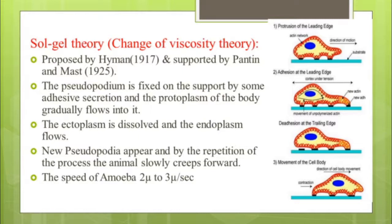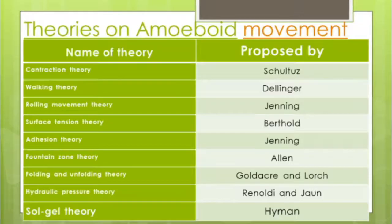The ectoplasm dissolves and endoplasm flows in; new pseudopodia appear and by repetition the animal slowly creeps forward. The speed of Amoeba is mostly 2 to 3 microns per second. Other theories explaining amoeboid movement include: contraction theory by Mast, walking theory by Dellinger, rolling movement theory by Jennings, surface tension theory by Berthold, adhesion theory by Jennings, fountain-zone theory by Allen, folding and unfolding theory by Goldacre and Lorch, and hydraulic pressure theory by Ronaldi and John. The best-explained theory remains the sol-gel theory by Hyman, supported by Pantin and Mast.